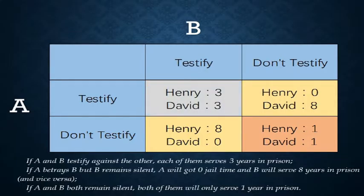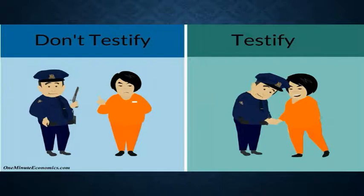Obviously, it seems in their best interest that neither of them testifies — that's only two years of total jail time, with one year each. However, let's look at things from A's perspective. He has two choices: testify against B, or not.